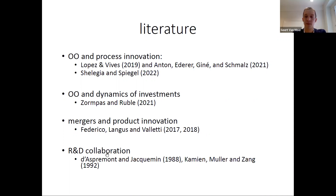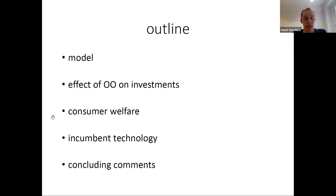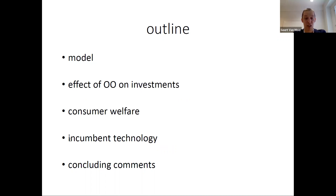The outline for today's seminar: first, walking through the model's key assumptions; then the main question — what is the effect of overlapping ownership on investments and under what condition do investments go up; then consumer welfare, since increases in investment don't necessarily benefit consumers; and finally an extension allowing for the presence of an incumbent technology, which restricts the scope for overlapping ownership to increase innovation.